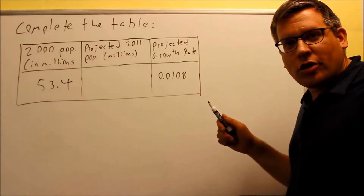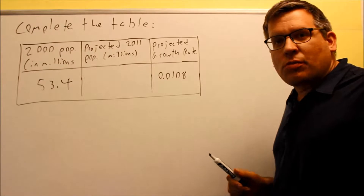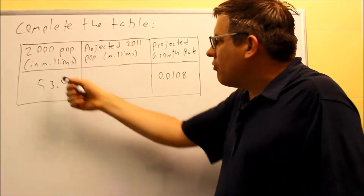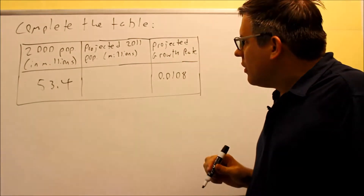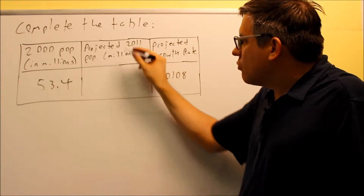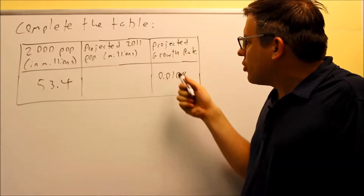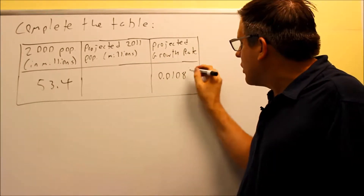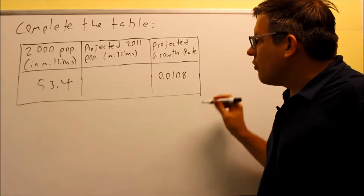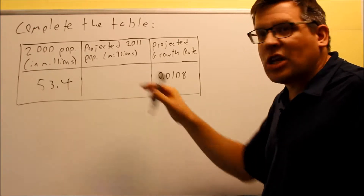For this problem we need to complete the table. We're given that the 2000 population, in terms of millions, is 53.4. The projected 2011 population, also in millions, is what we need to find. And it gives the projected growth rate, which is 0.0108.